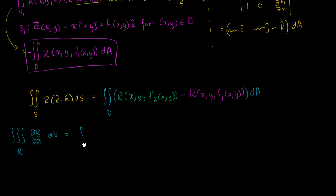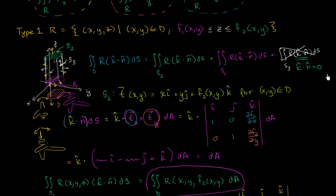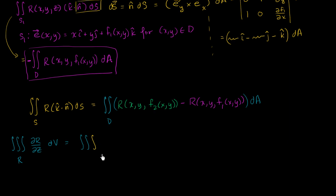We can rewrite this assuming we integrate with respect to z first. The lower bound on z in our type 1 region is f1, and the upper bound is f2. So we're going to integrate from f1 of xy to f2 of xy.